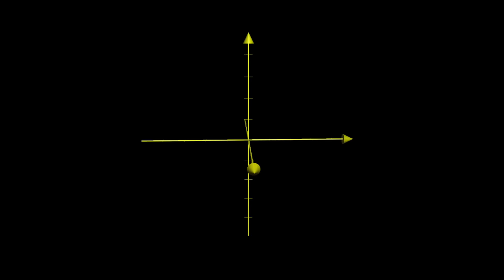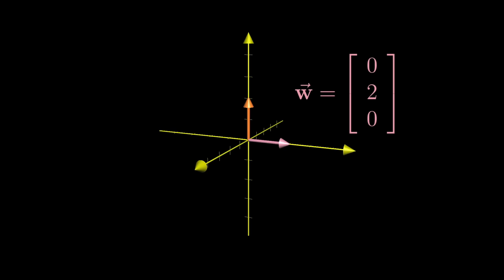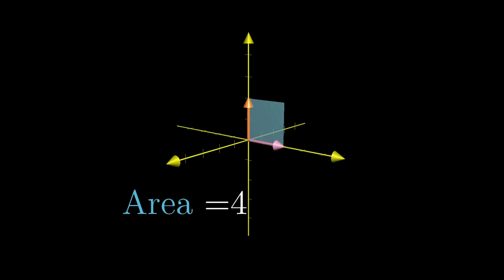For example, let's say that v was a vector with length 2 pointing straight up in the z direction, and w is a vector with length 2 pointing in the pure y direction. The parallelogram that they define in this simple example is actually a square, since they're perpendicular and have the same length, and the area of that square is 4. So their cross product should be a vector with length 4.